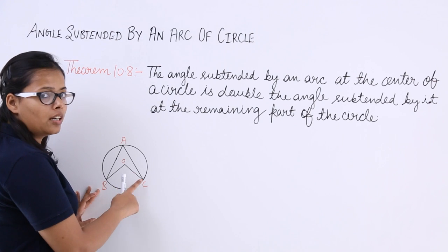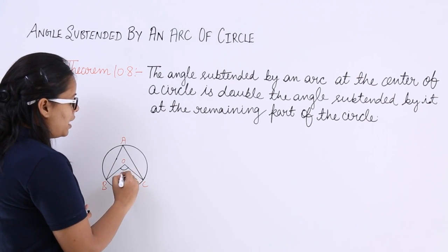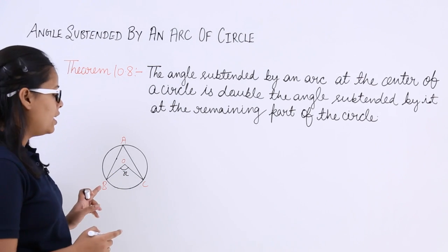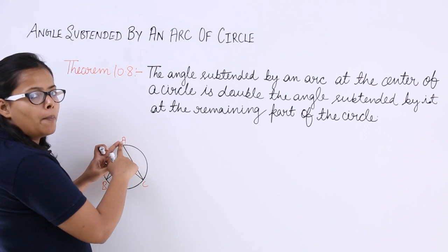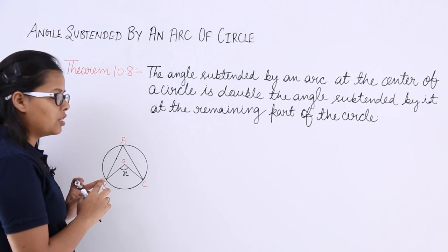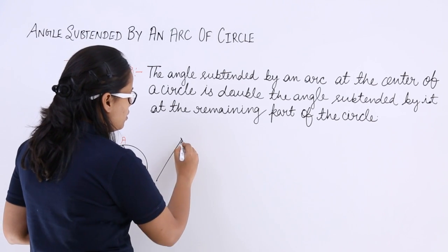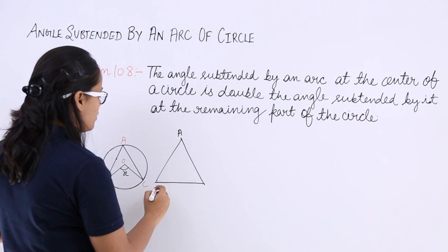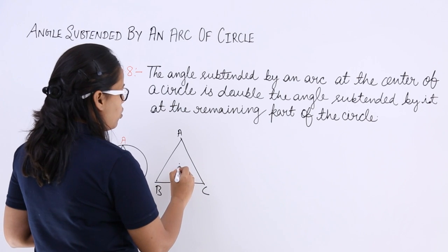You can see here, BC is an arc. BC is subtending some angle — let's suppose this is X — at the center. It is also subtending an angle at some remaining part of the circle; it can subtend some angle at any part of the circle. Let's suppose that point is A. So we have points A, B, C, and O.